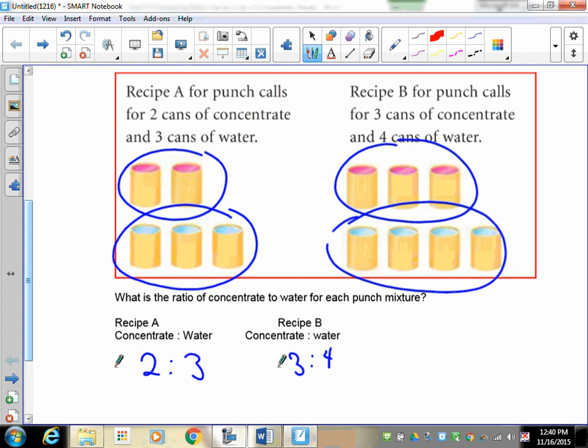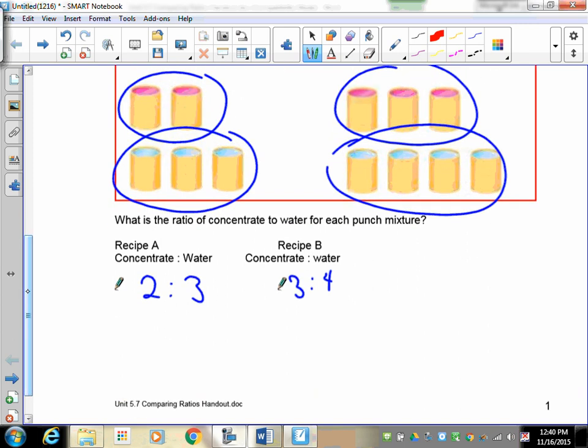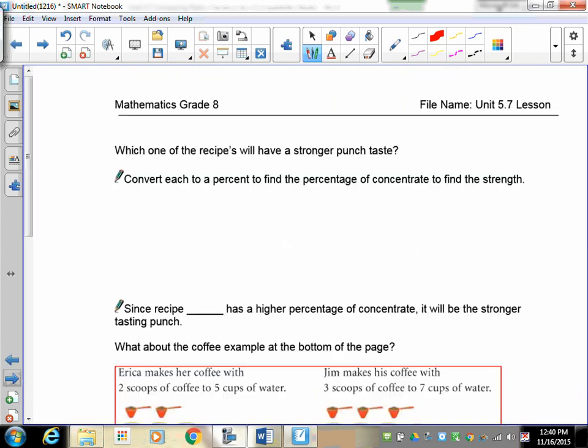Recipe B has three cups of concentrate and four cups of water. So two to three versus three to four. Now at a glance you may be able to tell, however you're going to have to provide proof. So we have recipe A which was two to three and we have recipe B which was three to four. What we're going to do is convert each one of these into a percentage to find out how much concentrate percentage-wise is being used here.